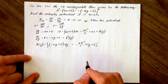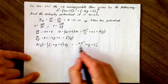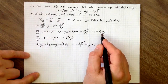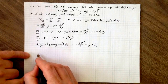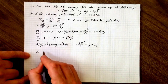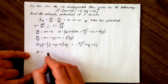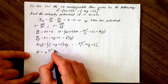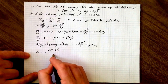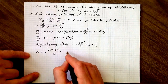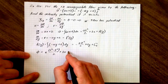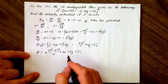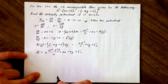This c1 is now the integration constant. We plug f(y) into the upper expression to get the final solution: phi equals a(x squared minus y squared) over half plus bx plus cy plus c1. And this is the solution to our problem.